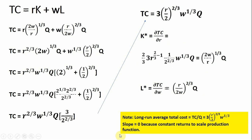One last thing highlighted here: if we wanted to get the long-run average total cost, we'd take this total cost equation and divide it through by Q, which would just leave us with a constant. We're showing here that the long-run average total cost in this example would just be constant — horizontal, slope of zero. That shouldn't be surprising because we started this example with a production function with constant returns to scale. Constant returns to scale implies a horizontal long-run average total cost curve. I hope you found this video helpful.